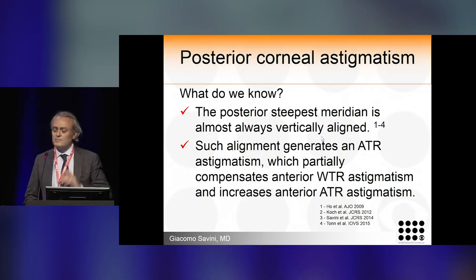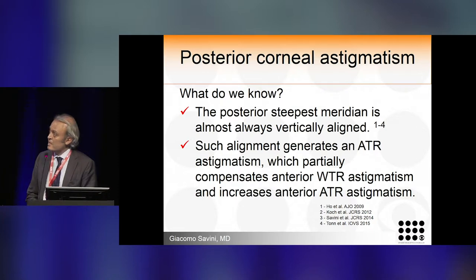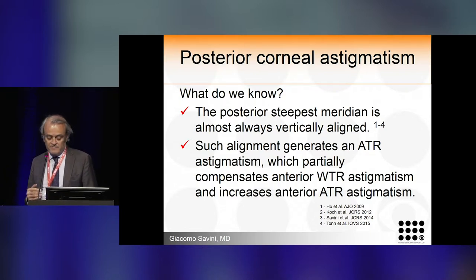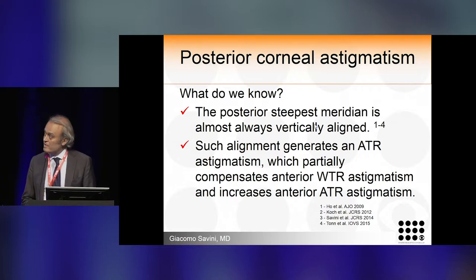When dealing with posterior and total corneal astigmatism, what do we know about posterior astigmatism? Several studies all agree that in most cases the posterior steepest meridian is vertically aligned. Such alignment generates against-the-rule astigmatism, which partially compensates the anterior with-the-rule astigmatism and increases the anterior against-the-rule astigmatism.